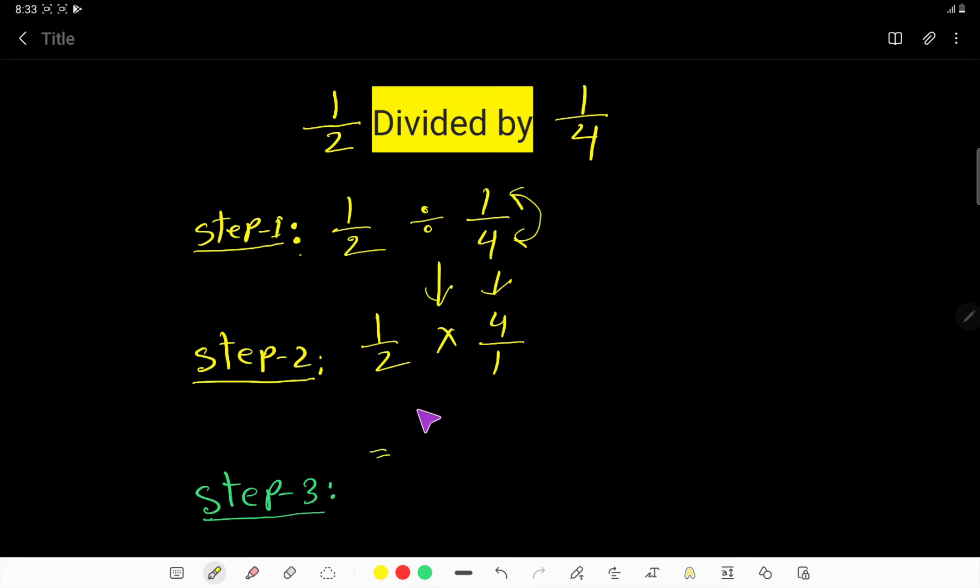So you are getting... now you have to multiply top to top and bottom to bottom. That is, you are getting 4 over 2.